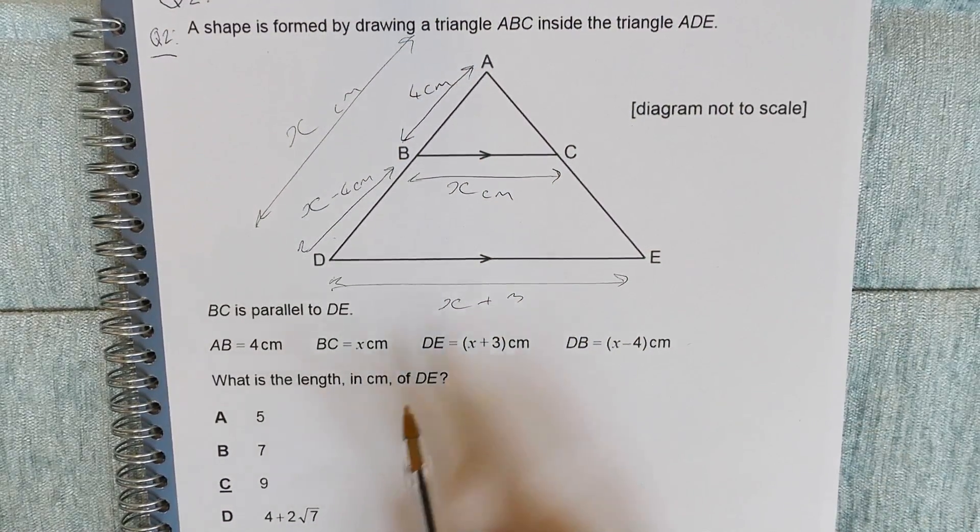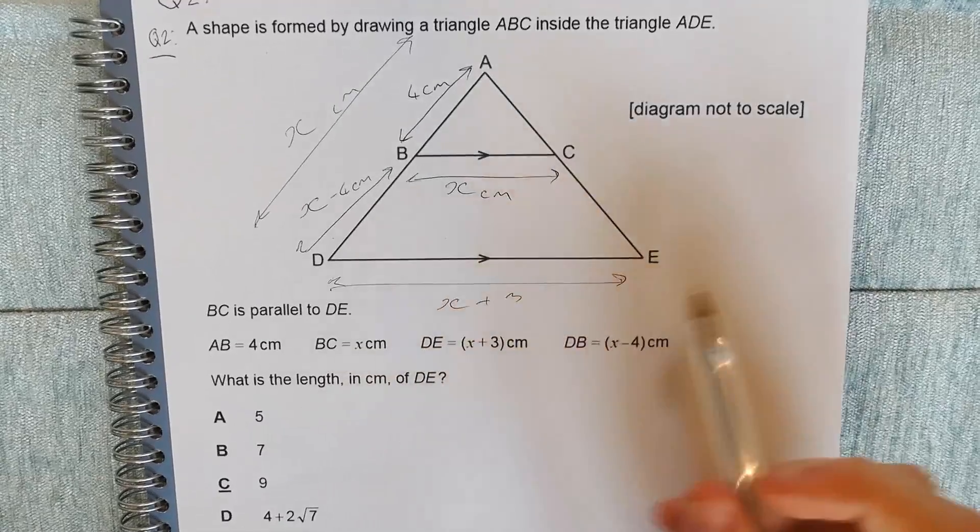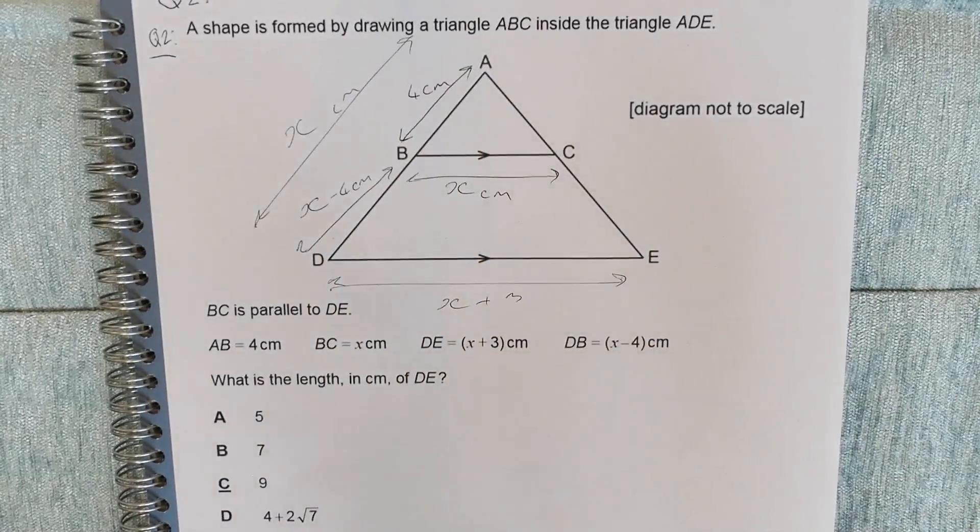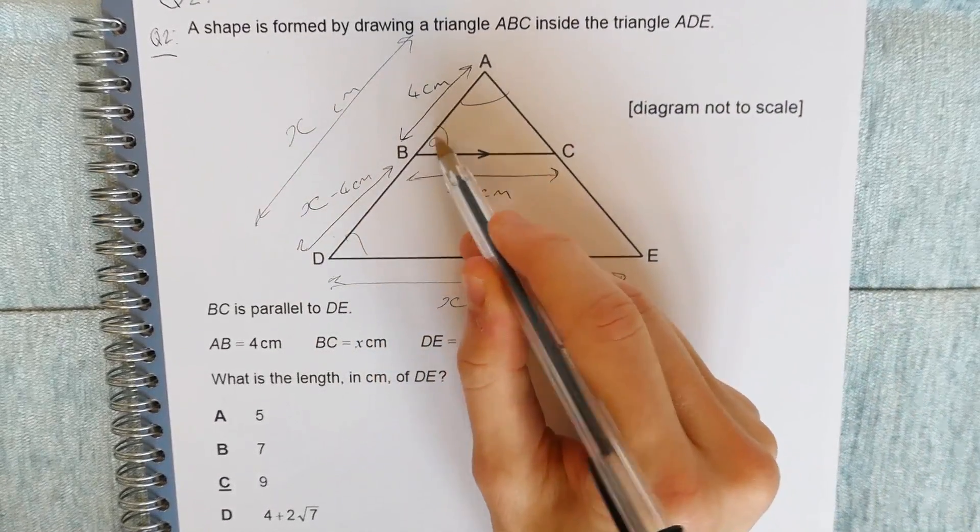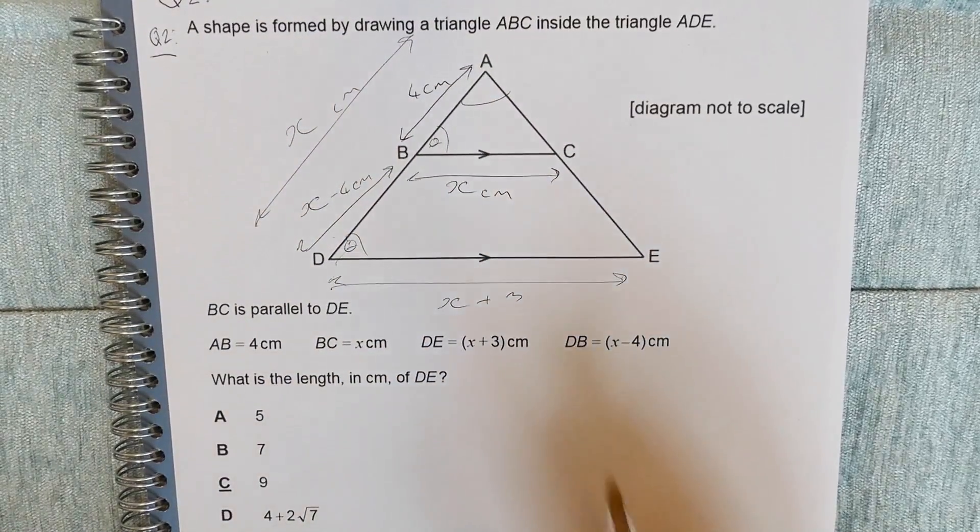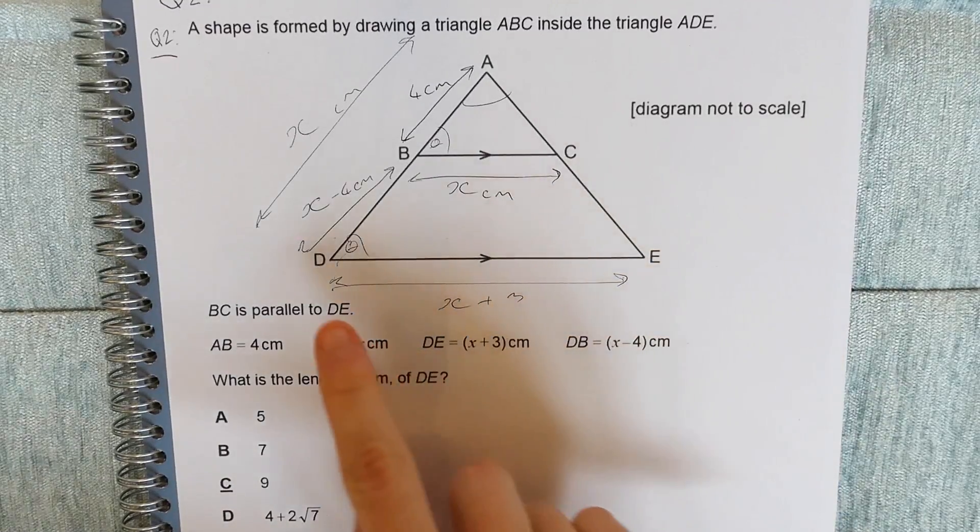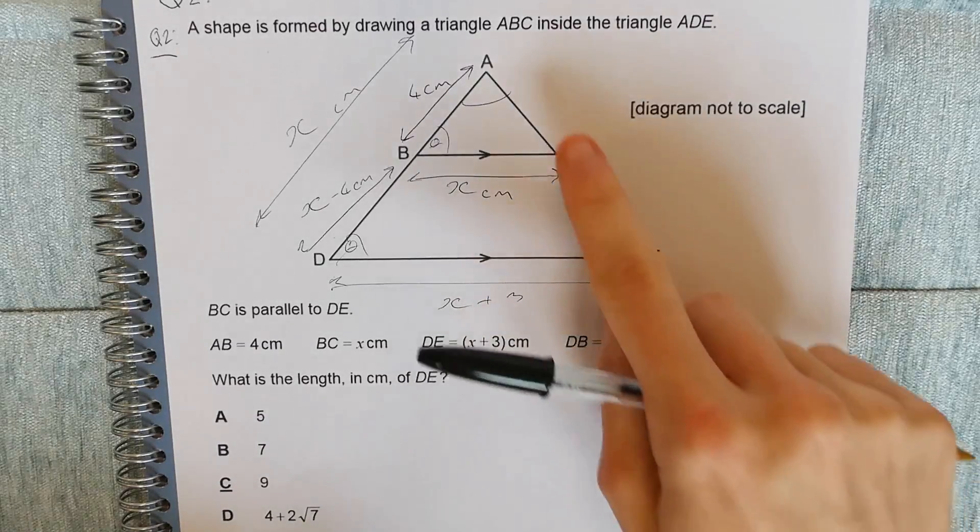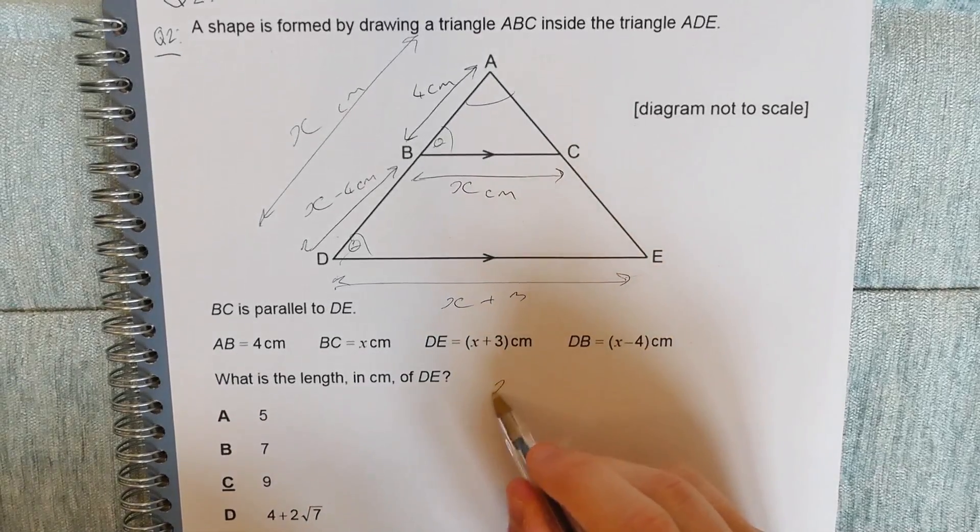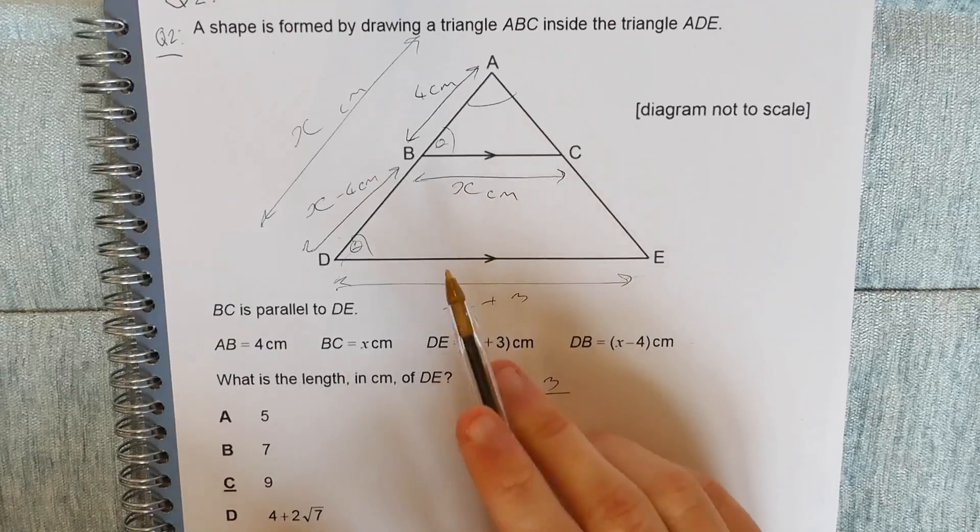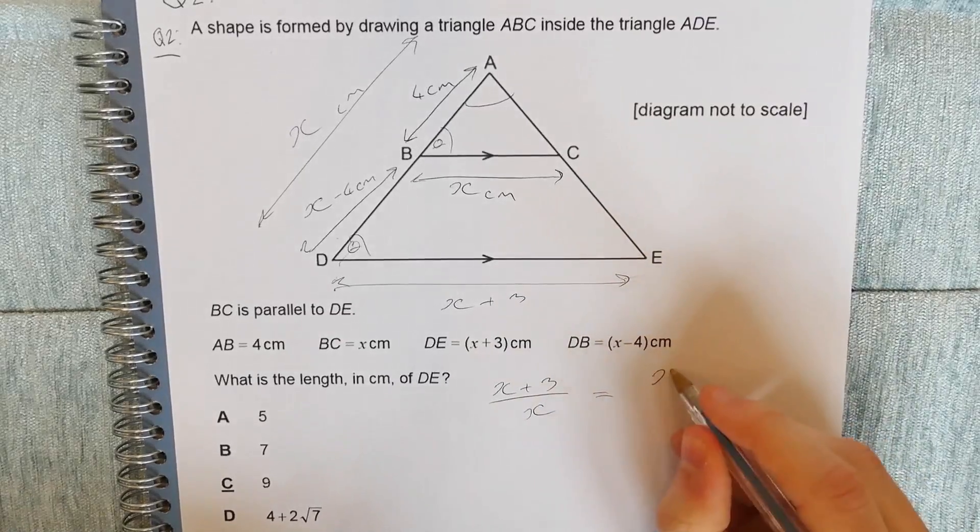So we're told that the shape is formed by drawing a triangle inside of this triangle ADE. Therefore, we can say that the triangle ADE is an enlargement of the triangle ABC. So they should have all the same angles, that angle is shared, these angles would be the same, and so on. So therefore, we also know that the ratio of enlargement for the sides is going to be the same. For example, the ratio of DE to BC should be equal to the ratio of AD to AB. So let's think about those ratios. So x plus 3 over x, that's between DE and BC, and it's equal to the ratio of AD to AB, so x over 4.